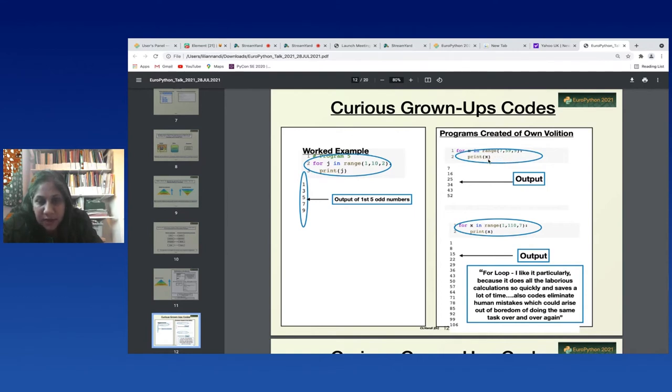But they enjoyed playing with these and creating unusual combinations of numbers. And one adult said 'I like it particularly about the for loop because it does all the laborious calculations so quickly and saves a lot of time. Also codes eliminate human mistakes which could arise out of boredom of doing the same task over and over again.' You know, this is somebody without a mathematical, scientific, or programming background. Immediately they seem to understand the intricacies and the beauties of a for loop.